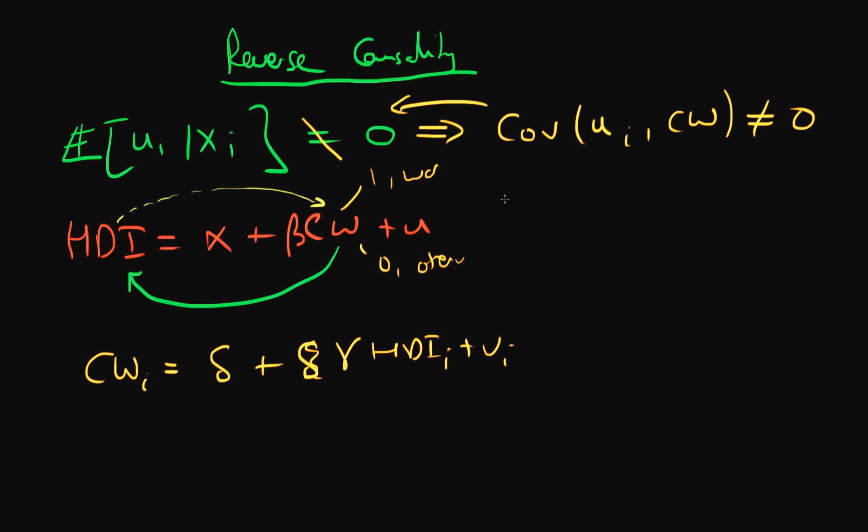The way in which we can go about this mathematically is that we can start out with our thing which we're trying to evaluate. The covariance of U with CW is going to be equal to the covariance of U with, well we can replace CW with this reverse causal relationship. So that's the same as the covariance of U with delta plus gamma times the HDI index plus V.